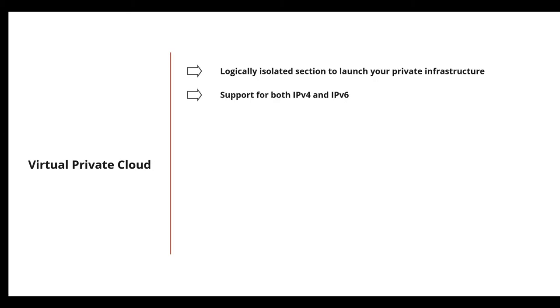Virtual Private Cloud is the area that is private to you in the AWS cloud — an isolated section where you can launch and create your private infrastructure like EC2 instances and databases. It's a virtual network that supports both IPv4 and IPv6. You can customize the networking and configure your own IP address range and subnets.